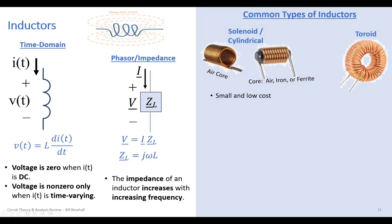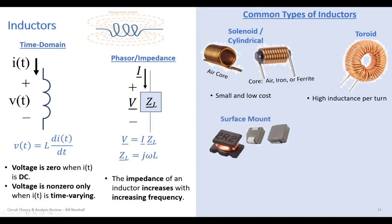Another type of inductor structure is a toroid — a coil of wire wrapped in a toroid shape around a core, often a ferrite core, which increases inductance per turn. Toroids have high inductance per turn, so if you need a large inductance you can use a toroid, though there is a weight penalty because you're adding material instead of just wrapping the coil around air.